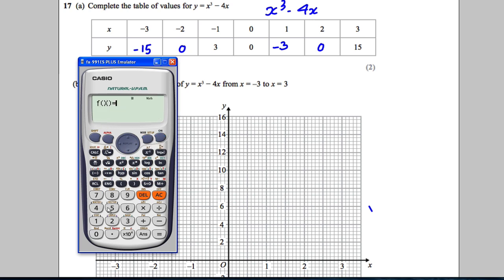The last thing you can do which is even more useful, you can go mode and table. You can type in your function up here, our function is x³ subtract 4x, and you press equals. It's asking you what x value you want to start at, let's start at -3. You want to end at 3 and you want to go up in 1s. There you go.